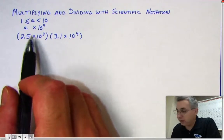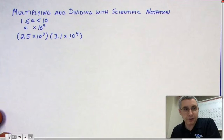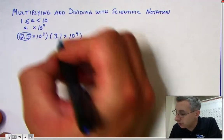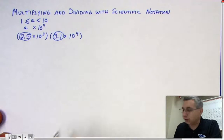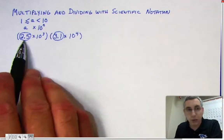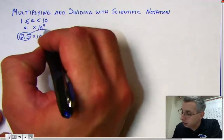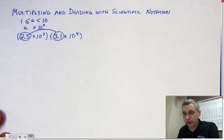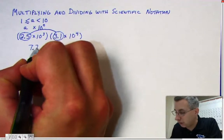So looking at this pattern, this a — this number that comes before the times 10 — if you're multiplying two numbers in scientific notation, the first thing you want to do is look at the two a values. Here we have the 2.5 and here we have the 3.1, and you want to multiply those together. When you multiply 2.5 and 3.1, you get 7.75.